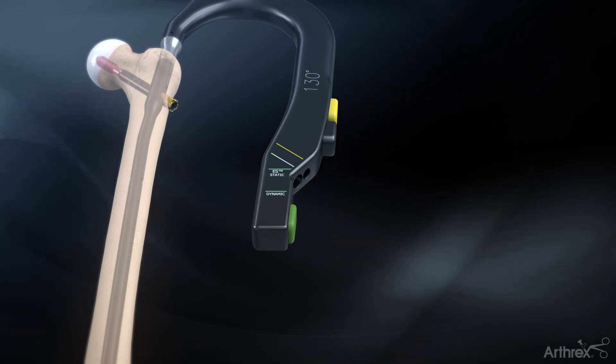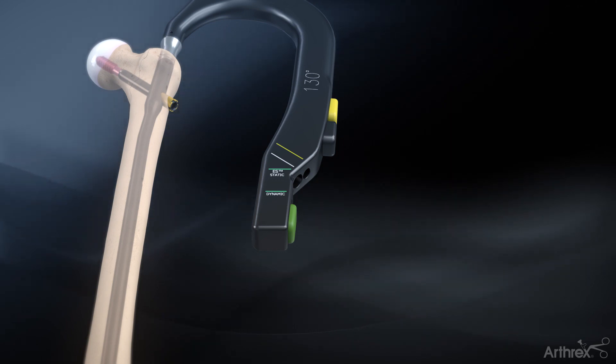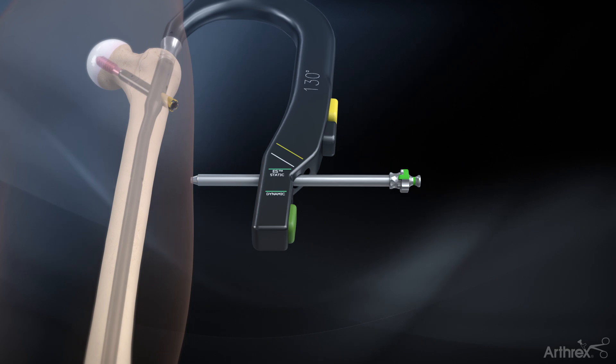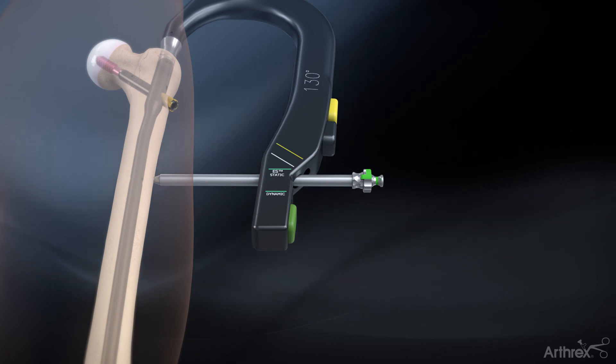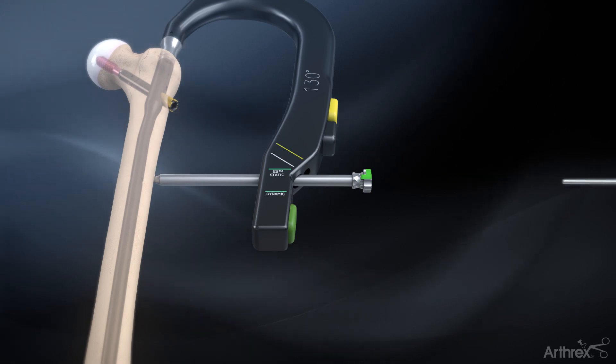For the ES trochanteric nail and short trochanteric nail, distal locking is performed through the targeting module. Place the distal screw triple sleeve assembly through the appropriate distal hole in the targeting module and mark the skin. Make the incision and advance the distal screw triple sleeve assembly to the lateral cortex of the bone. Remove the distal drill guide obturator.